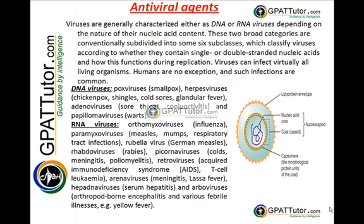Examples of DNA viruses include adenoviruses and papillomaviruses. Examples of RNA viruses include the human immunodeficiency virus, otherwise known as a retrovirus, which causes acquired immunodeficiency syndrome. Measles, mumps, and respiratory tract infections are also caused by RNA viruses.